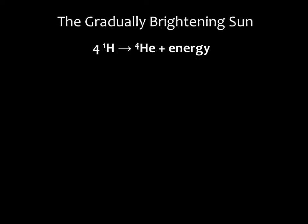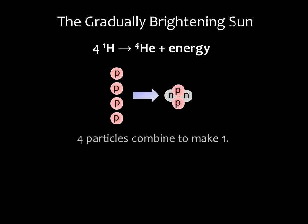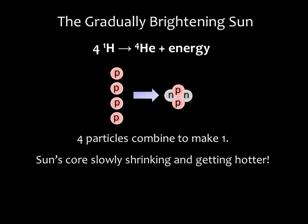There's one more thing I want to mention. Each fusion reaction is converting four protons into one helium nucleus. Therefore, the total number of particles in the sun's core is decreasing. This gradual reduction in the number of particles causes the core to slowly shrink. This slow shrinkage will gradually increase the core temperature and the fusion rate. Therefore, the sun is getting brighter and hotter, albeit quite slowly.